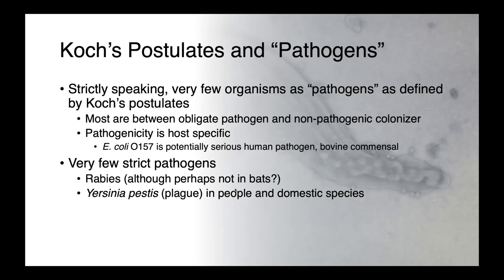There are very few true strict pathogens. Rabies may be the best example — it is never normal to find this in an animal, and if it is there, it's uniformly associated with disease. Yersinia pestis, the causative agent of plague in both people and domestic species, would be another example — it's never normal to find Yersinia pestis. But by and large, disease is context-specific, and pathogenicity is context-specific.